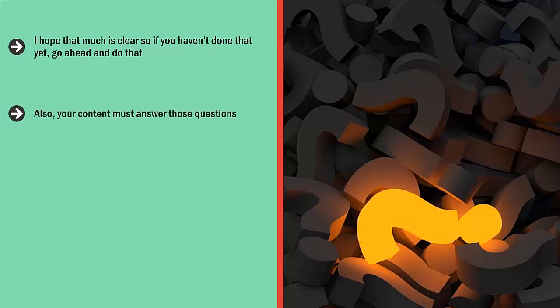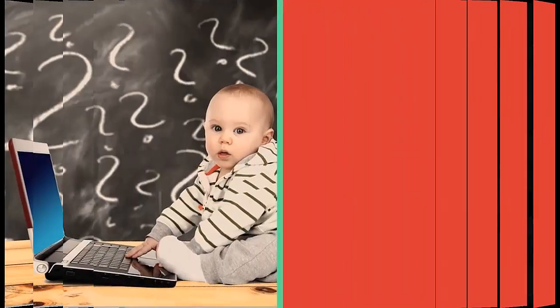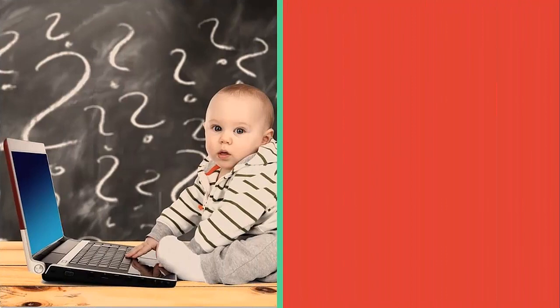Also, your content must answer those questions. In step two of Quora answer marketing, you have to filter all the questions you've found on Quora in terms of how well they fit your level one material. If there are not enough questions that directly fit, you might want to hire a virtual assistant to create questions for you. They're going to have to use many accounts and switch among them to make it look legit. Regardless, you need to populate Quora with questions that are directly related to your niche and which are directly answered by your layer one or layer two materials.